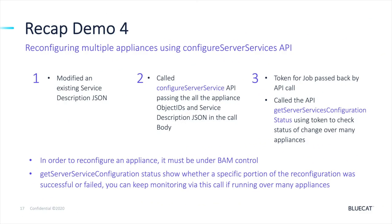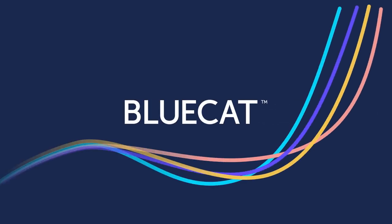To recap Demo 4, we've shown how modification of the JSON service descriptor can allow for an update to multiple appliances in parallel using the Configure Server Services API — by passing it multiple object IDs. The Get Server Services Configuration Status returns detailed status for changes across many appliances in parallel with great granular detail.